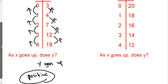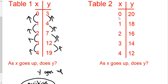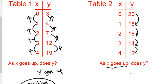Same thing over here. Is my x value going up every single time? Yes. So as x goes up, that's the first thing you check. Then, is my y going up or down? 20 goes down to 18, keeps falling — falling again — and finally 14 down to 12. So y goes down. That means we have a negative direct relationship. And that's how you can read it from the tables.